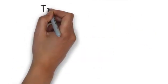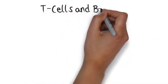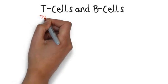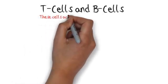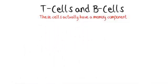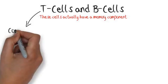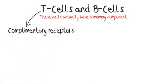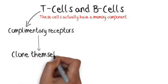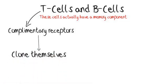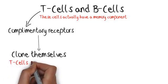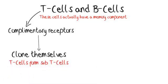There is a third line of defence made up of T cells and B cells. The difference between these cells and the second line of defence is that these cells actually have a memory component. T cells will memorise and create a complementary receptor for an antigen for the disease coming in, and they will then clone themselves and stay in your body in wait for the disease to reoccur. T cells form sub-T cells which will react in different ways.